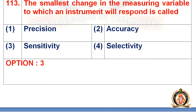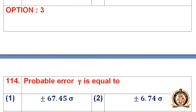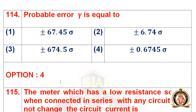Question 113: The smallest change in the measuring variable to which an instrument will respond is called. The options are precision, accuracy, sensitivity, and selectivity. The right option is the third option, that is sensitivity.